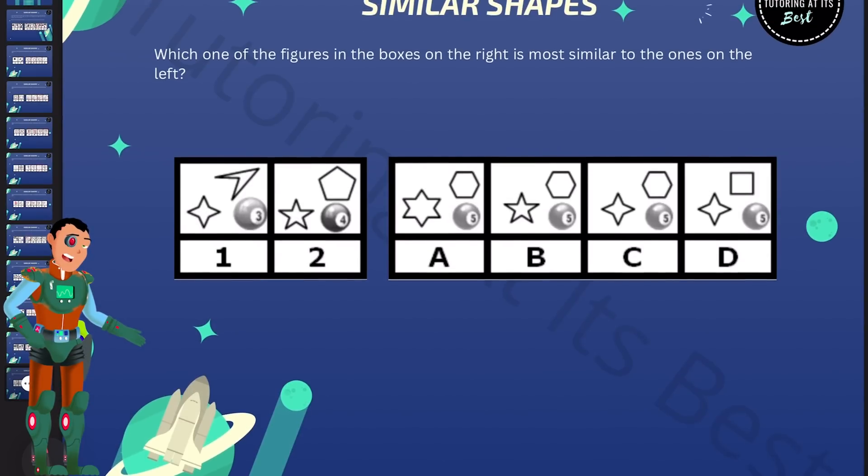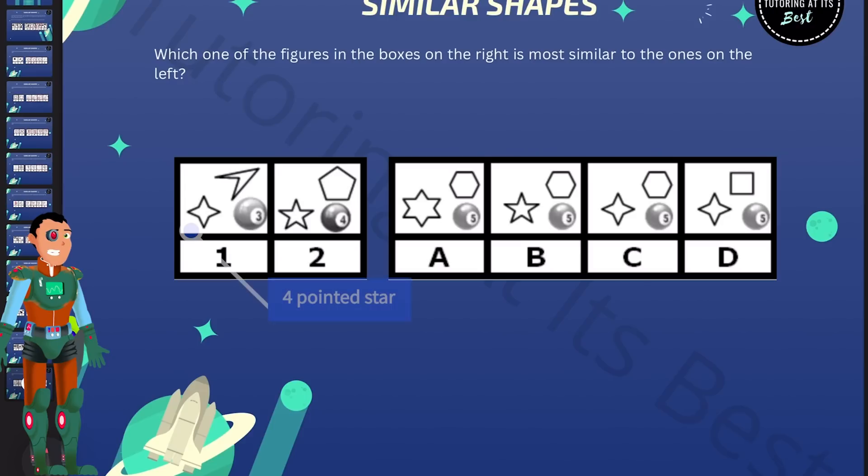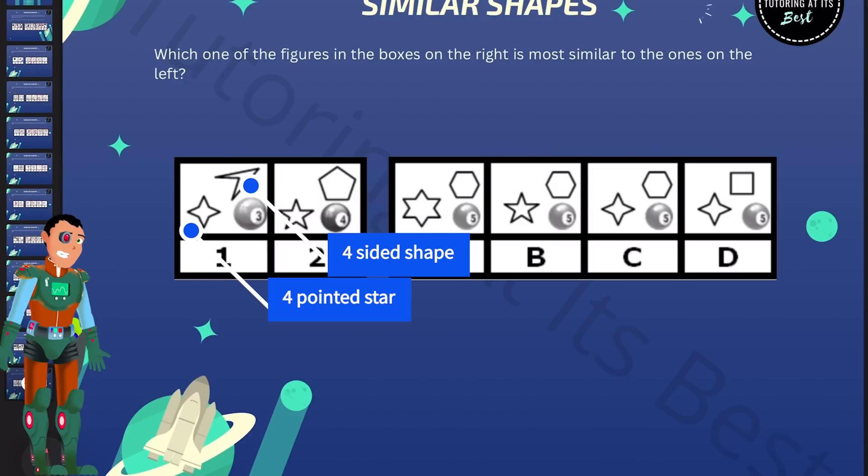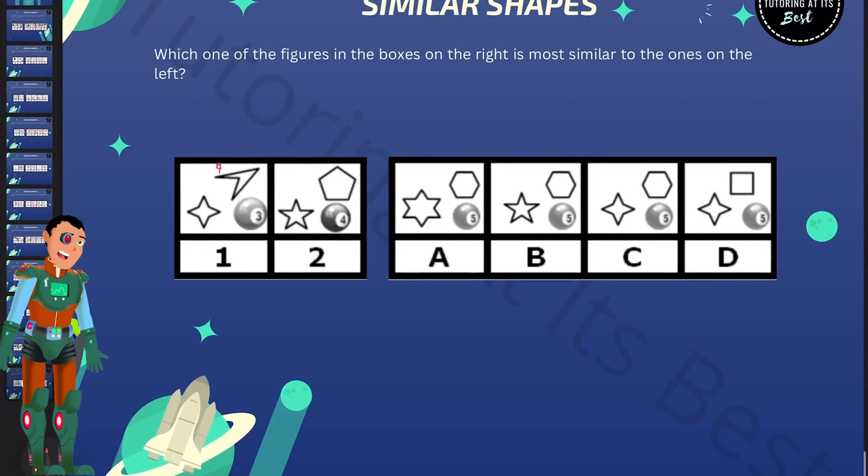So what do we notice here? Well, figures one and two are made up of three shapes: a star, a polygon and a pool ball. And in each case, the pool ball has a number which is one less than the sides or points in the other two shapes. So it has a number which is one less than the sides or points in the other two shapes. So again, that's four sided. So this would be a three.